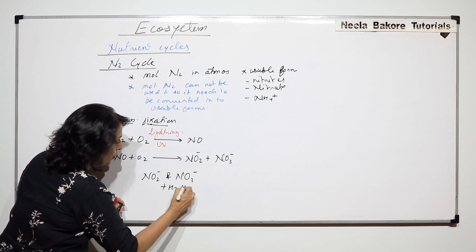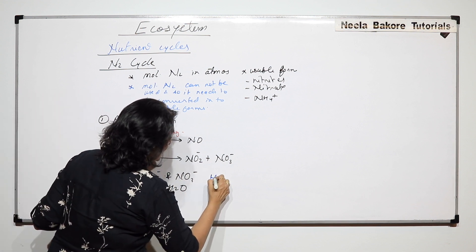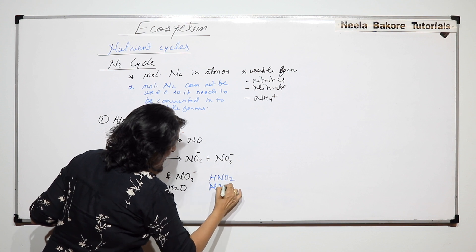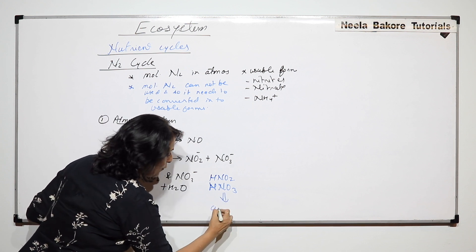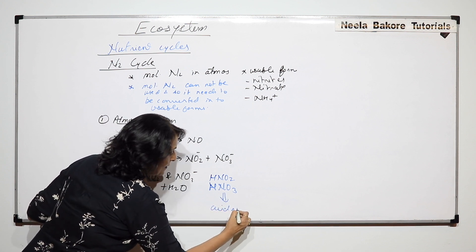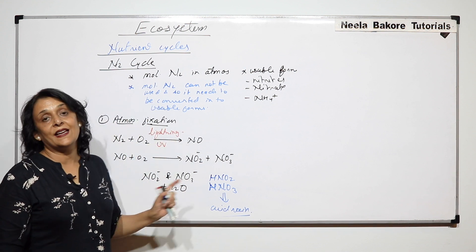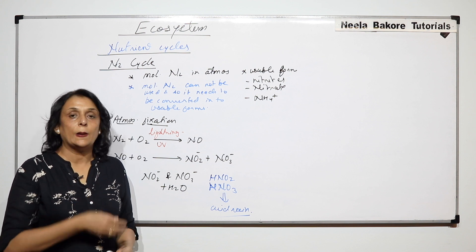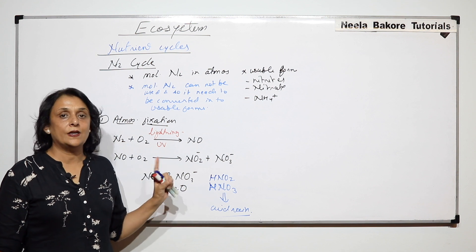Further oxidation will take place and we would get nitrite and nitrates. These two will react with water to form acids, nitrous acid and nitric acid. And they come to the soil in the form of acid rain. And these are nitrites and nitrates.